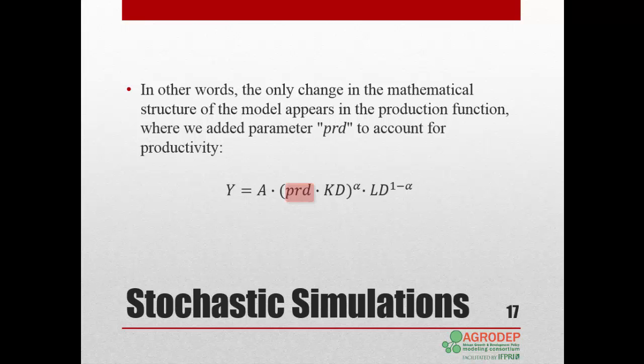prd represents the productivity of capital. So when prd equals 1, we have the same structure as in Lesson 8, but for any other value, the demand of capital will vary.